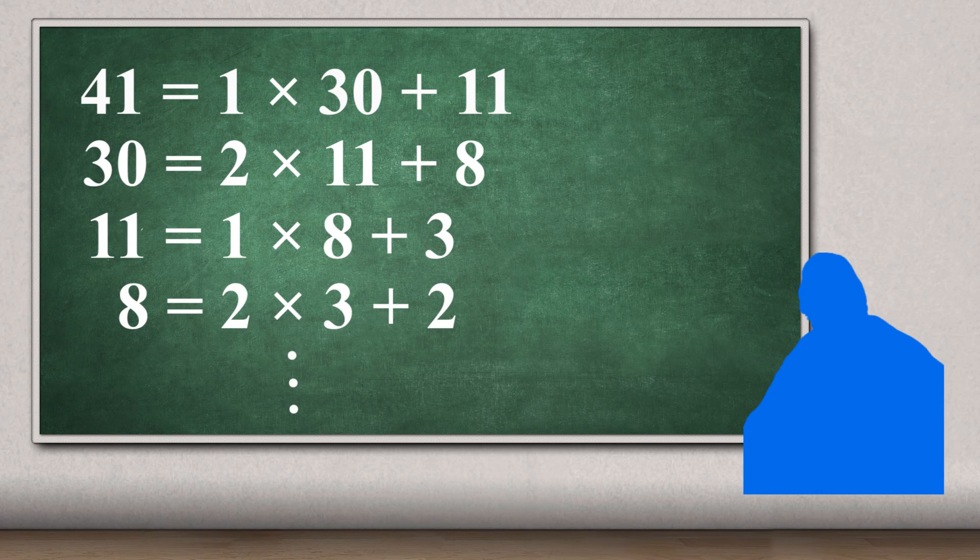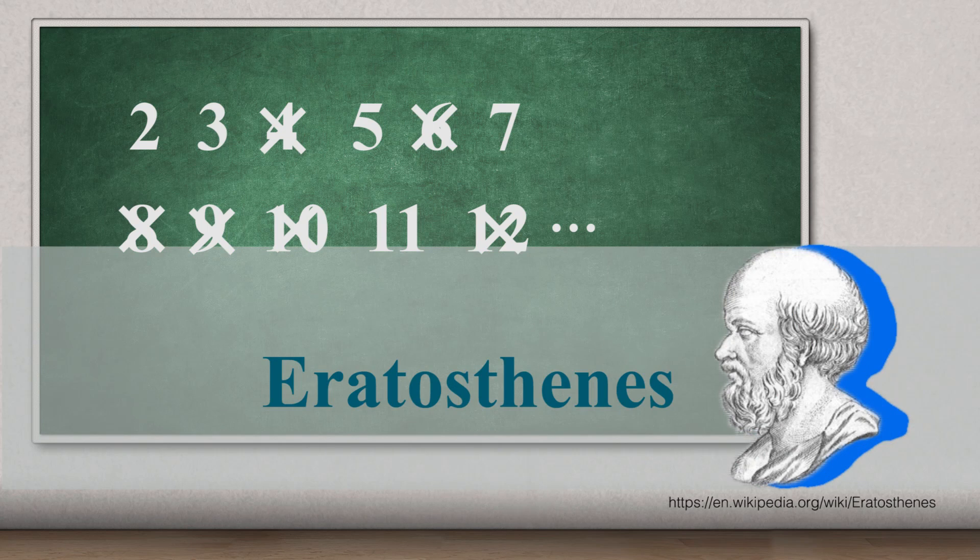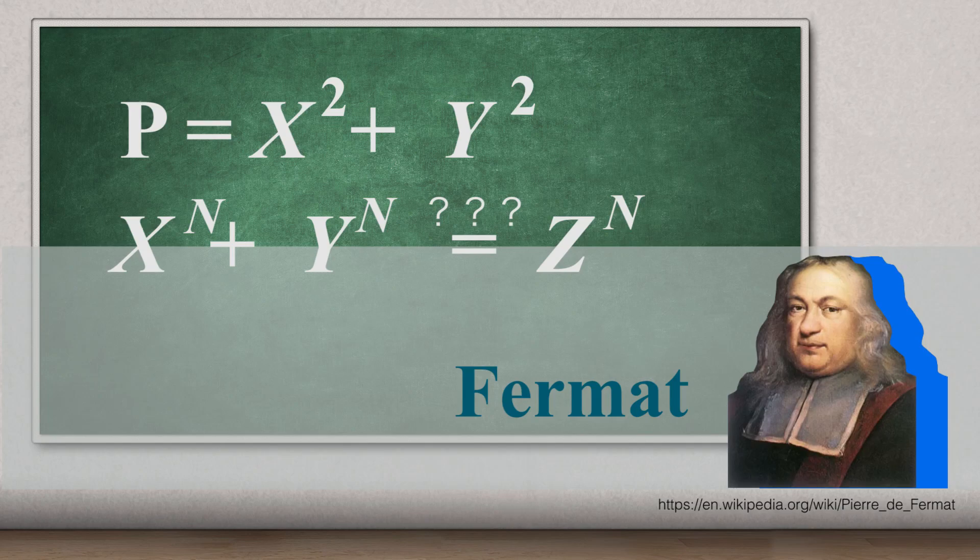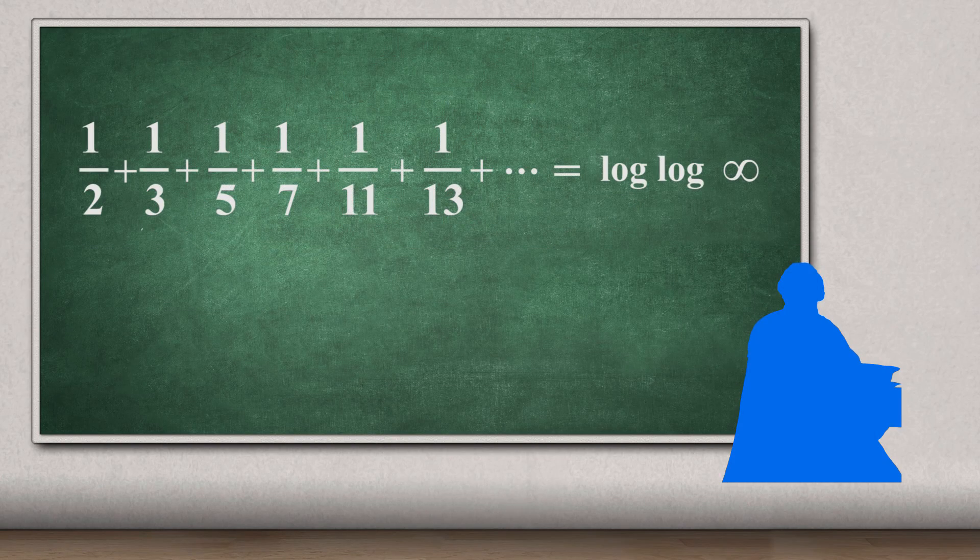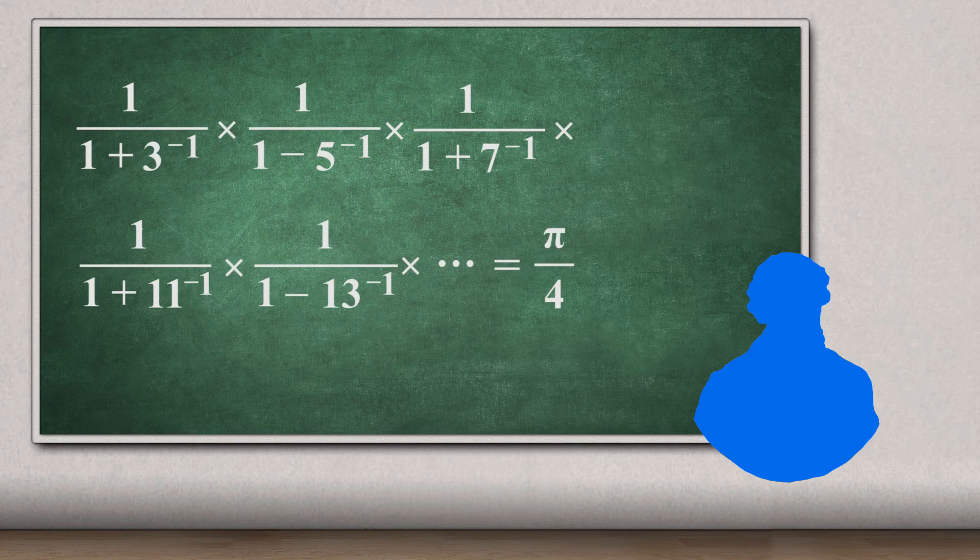Prime numbers have many interesting properties which cannot be imagined from their simple definitions. From the time of Euclid, many great mathematicians worked very hard on prime numbers. They proved many interesting theorems and discovered even more interesting phenomena.